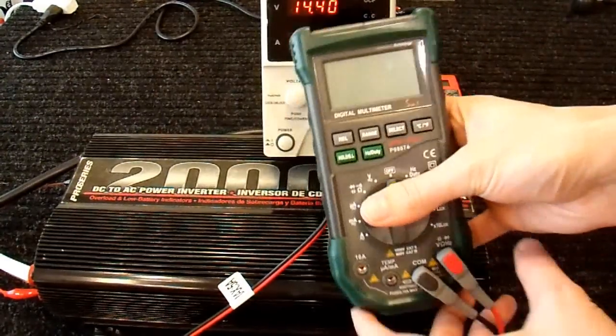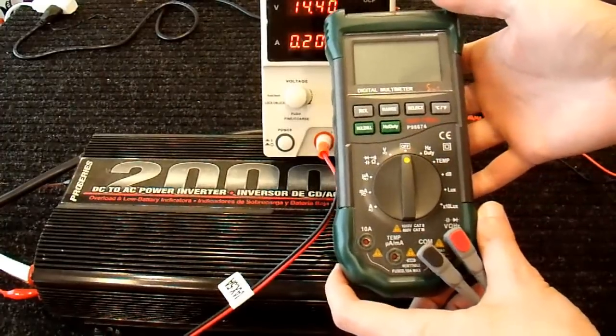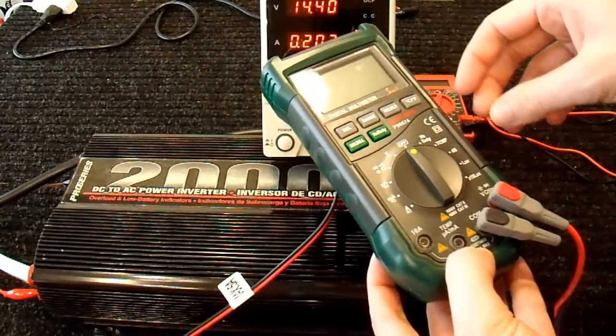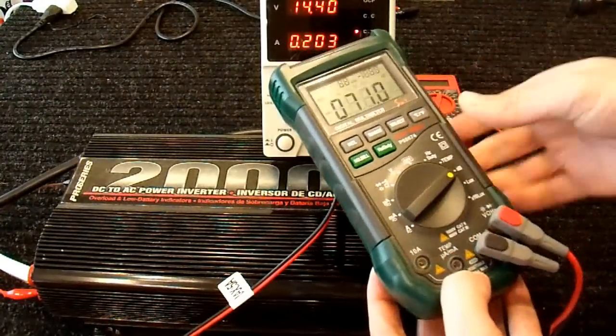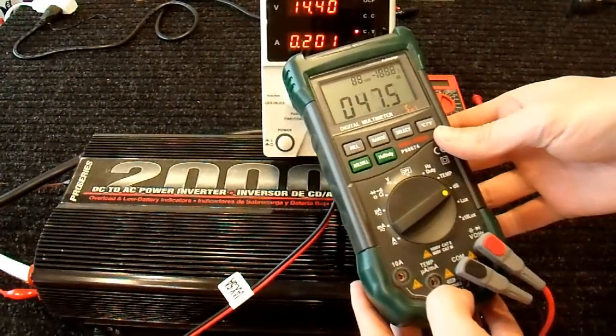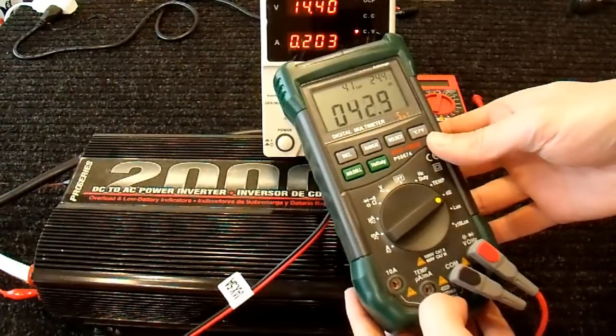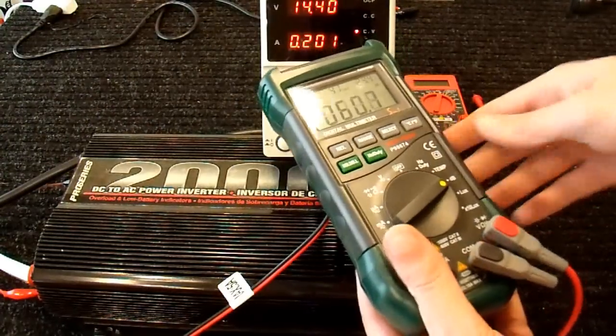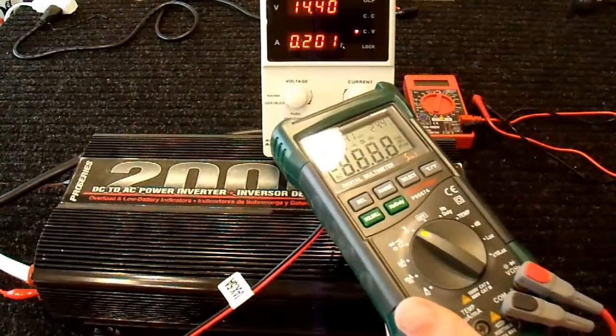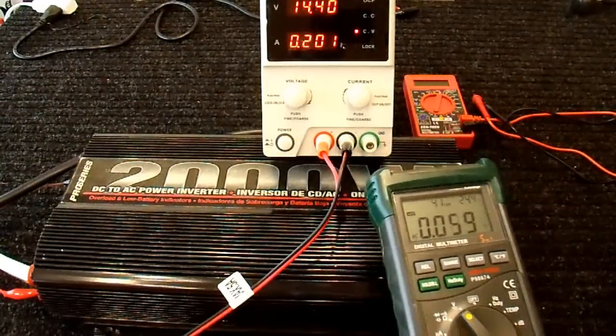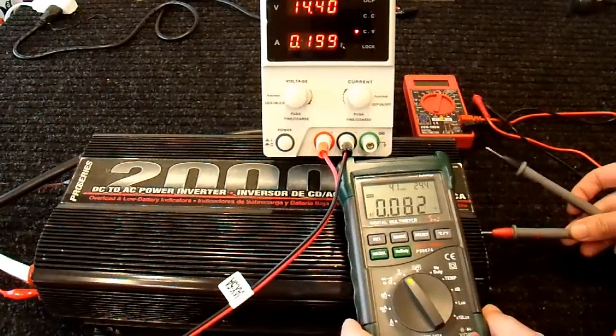Alright. This is a much nicer meter. This is also a Harbor Freight unit. It has some interesting functions, measures decibels, for example, which is kind of neat. You can see as I talk, the decibels go up. But anyway, we don't care about that. So let's set this on AC volts and see what this better quality meter says.